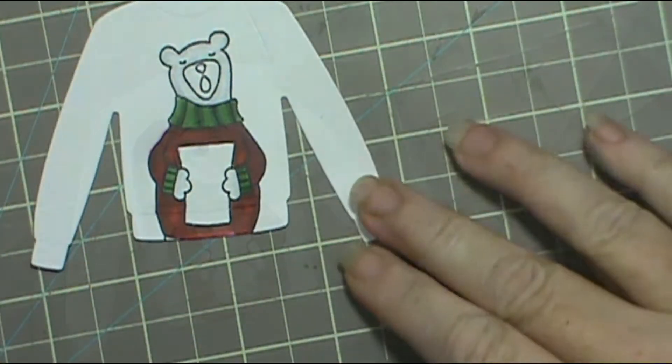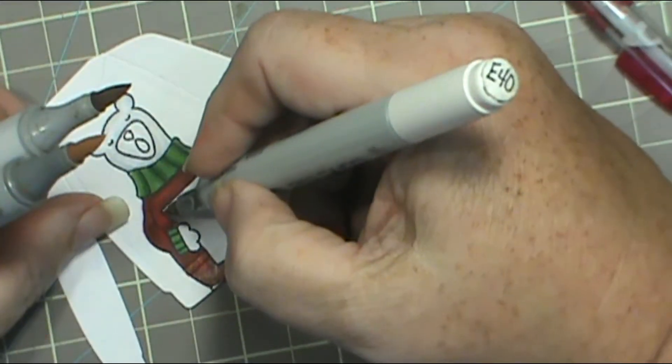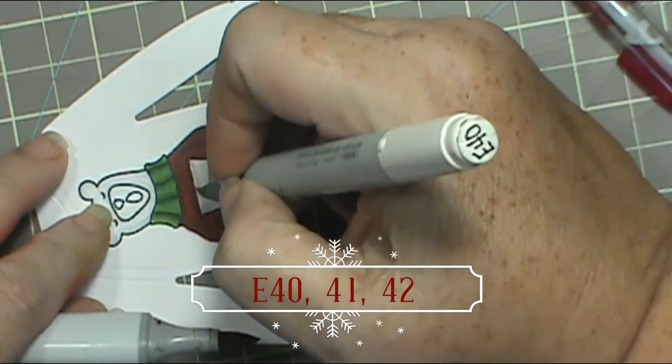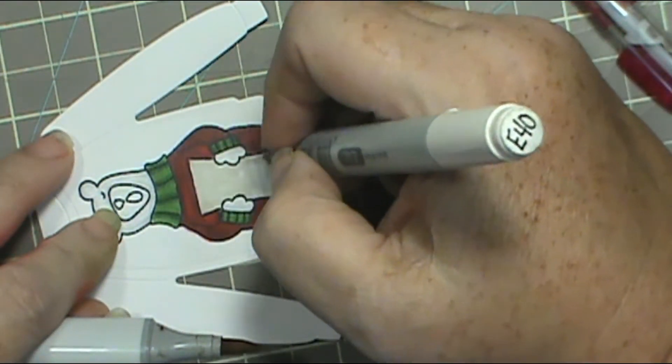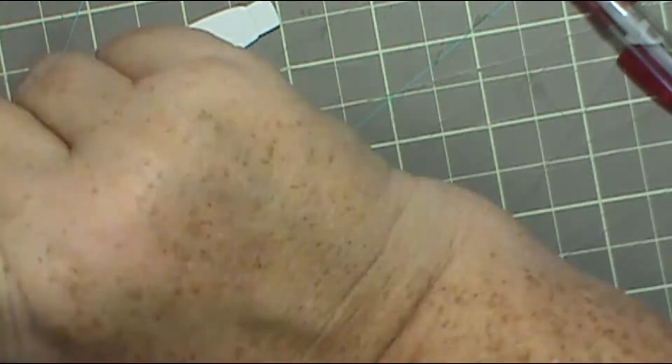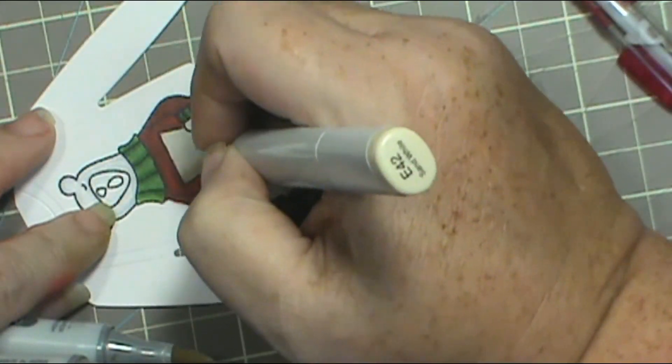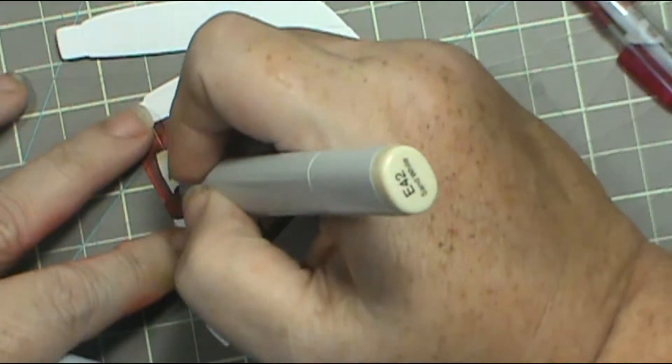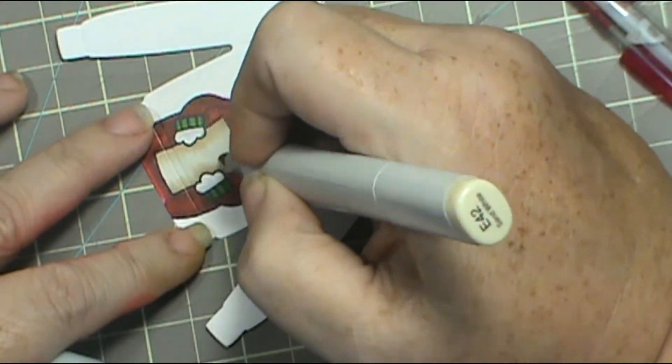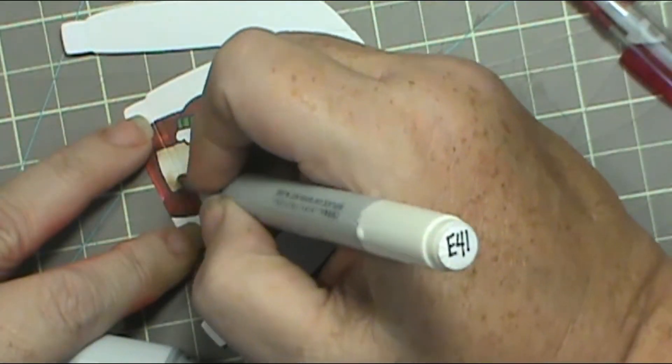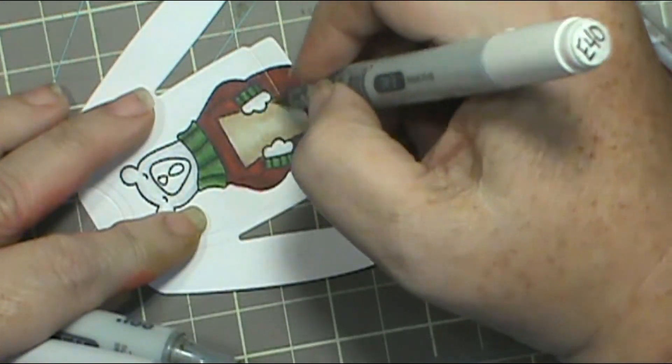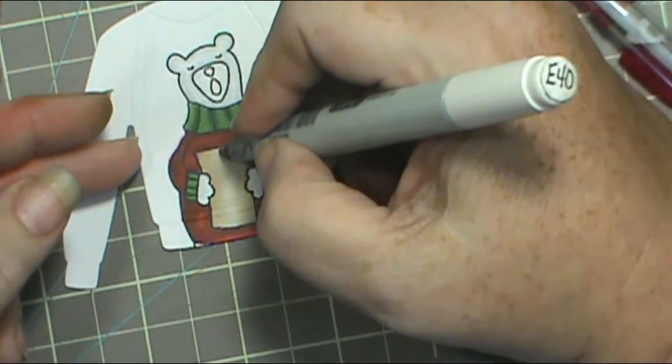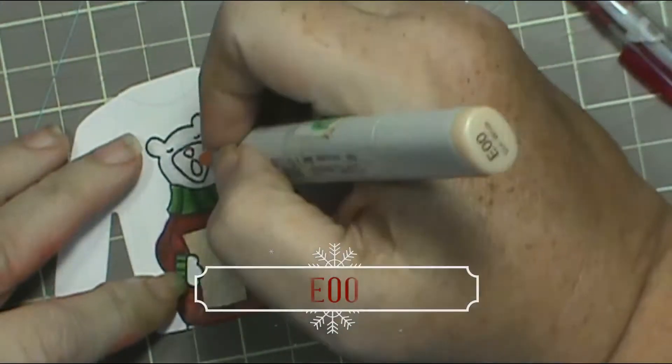You have to be real careful with the red. If you go over, it's really hard. The rest of the colors, the colorless blender pretty much takes care of, but man, it'll give you a fit on that red. So if you're going to use red, just be real careful and try your best to stay in the lines. Maybe, if you need to, like me, slow down when I get to that point.